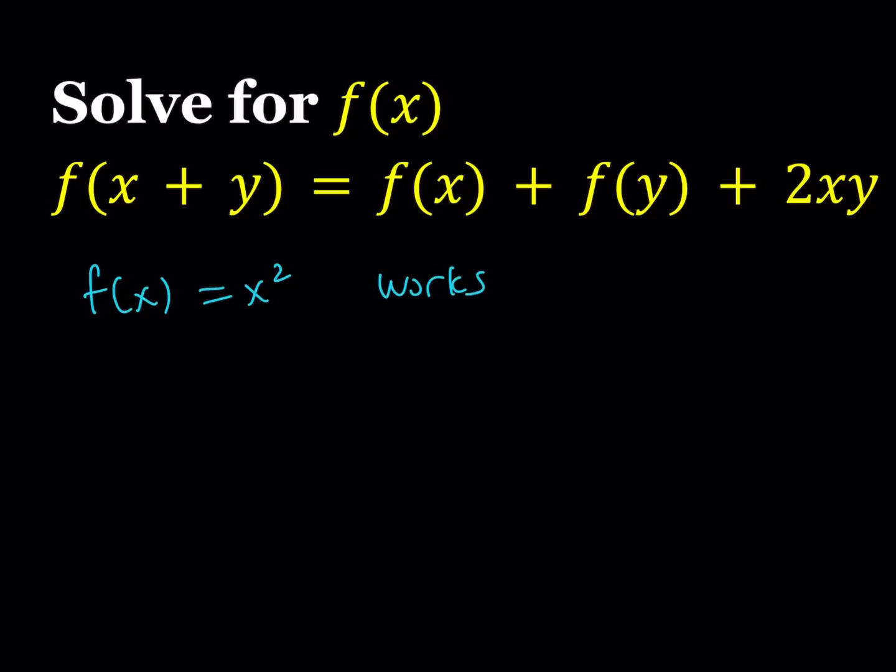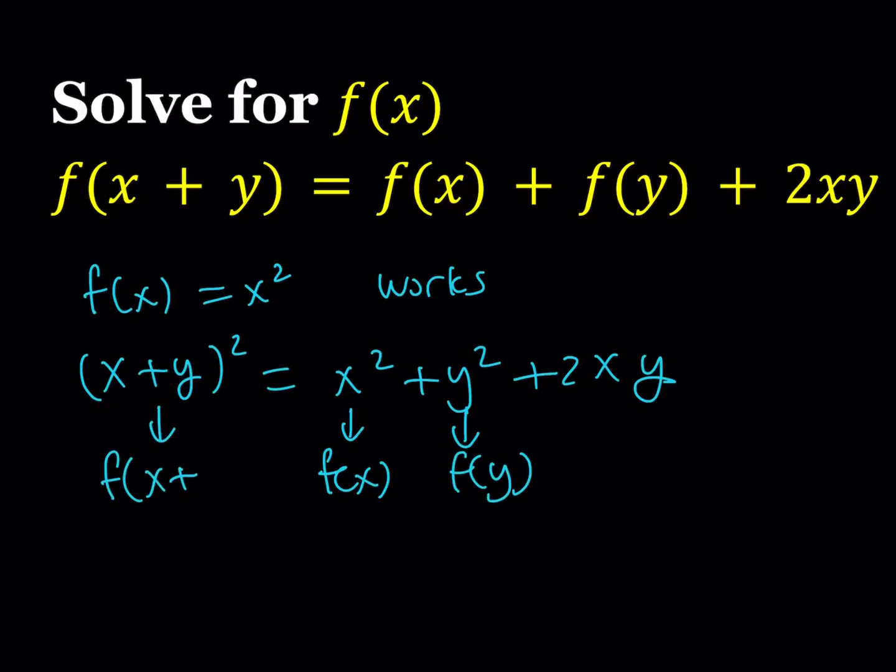Okay, f of x equals x squared works. Why? Because if you square x plus y, you get x squared plus y squared plus 2xy. And with the assumption that f of x equals x squared, this happens to be f of x, this happens to be f of y, and this happens to be f of x plus y. And then our equation is satisfied. But of course, this is kind of like guess and check. We've got one solution. But can we find other solutions? Or are there other solutions?